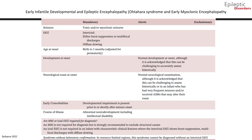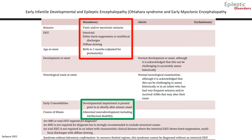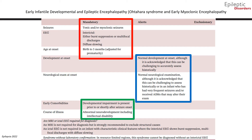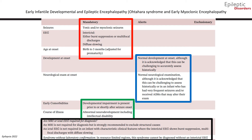The mandatory diagnostic criteria for early infantile developmental and epileptic encephalopathy include having tonic and/or myoclonic seizures and an interictal EEG showing either burst suppression or multifocal discharges with diffuse slowing. The typical age of onset is from birth to age 3 months. Early comorbidities include developmental impairment present prior to or shortly after seizure onset, and abnormal neurodevelopment including intellectual disability. Findings that should alert the physician to consider an alternative diagnosis include normal development and neurological examination. An MRI, although not required for diagnosis, may be useful to exclude structural etiology, and an ictal EEG is not required for diagnosis.